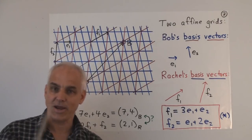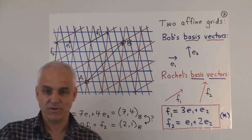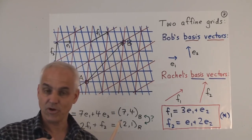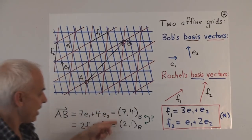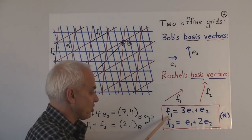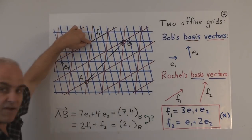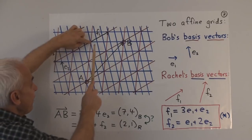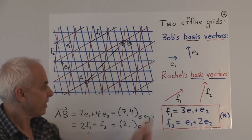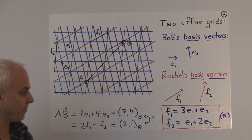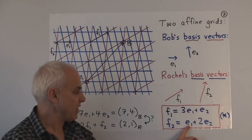This is a very important problem in linear algebra — and also in applications like computer games or graphics, where you have two different observers and want to compare their perspectives. The key to understanding the relationship between these two systems is to observe that you can express Rachel's basis vectors in terms of Bob's. F1 can be described by Bob as the vector (3, 1) — in other words, F1 is 3 times E1 plus E2. And F2, described by Bob, is E1 plus 2 times E2.